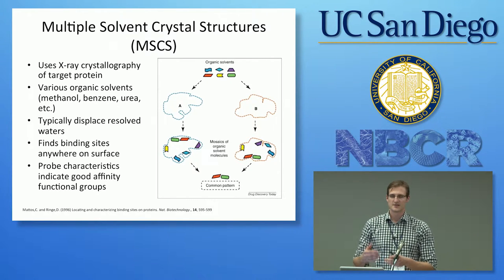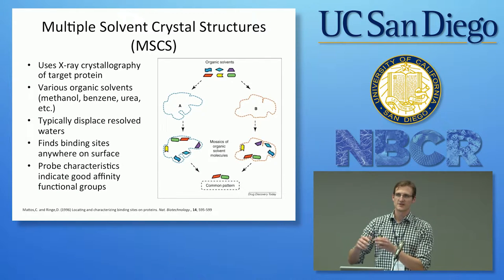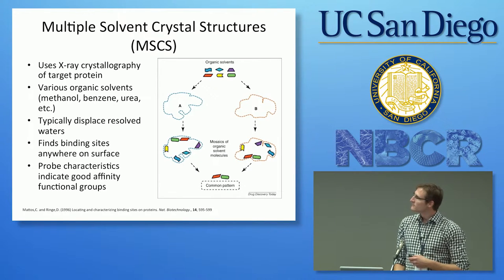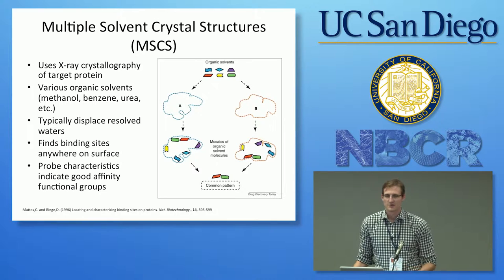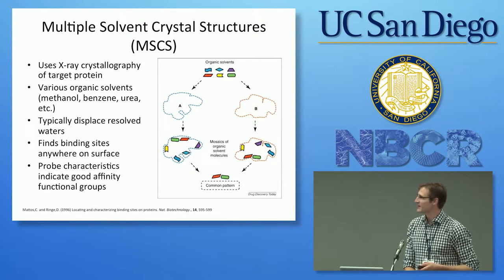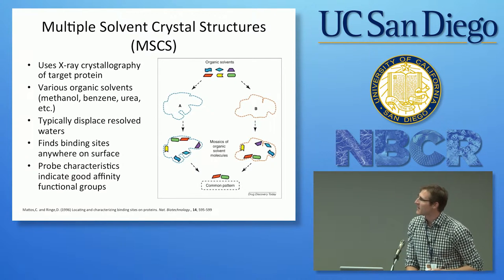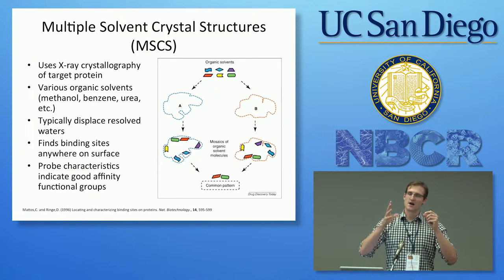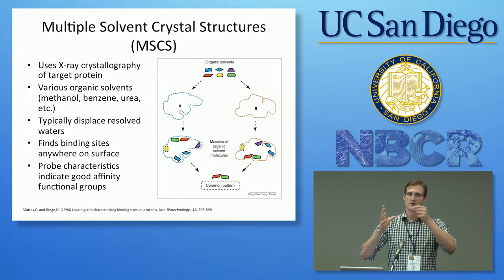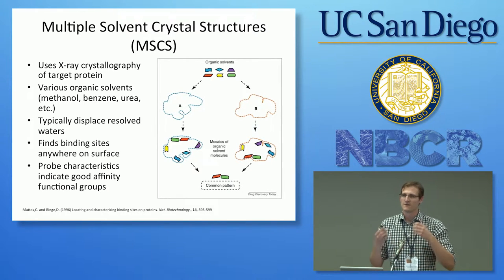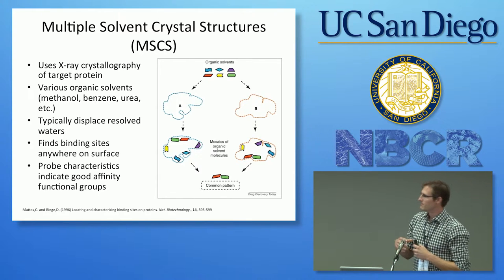The type of probe that binds to the surface tells you what type of functional group might bind well to that part of the surface. FTMAP is a tool made at Boston University that attempts to perform this task computationally — it mimics the MSCS method. The reason it's called FTMAP is because it uses a Fourier transform to dock small molecular probes to the surface of the protein.